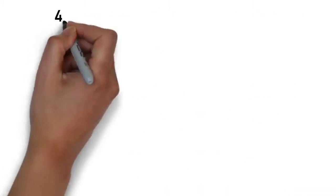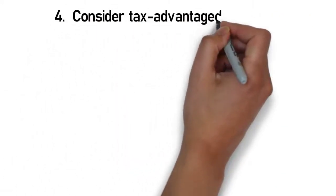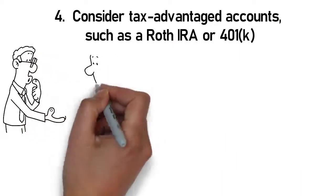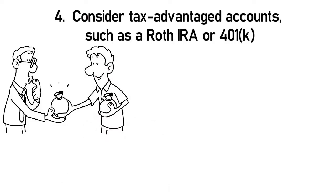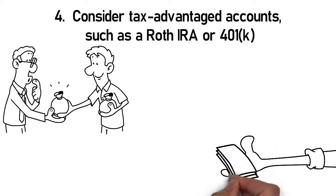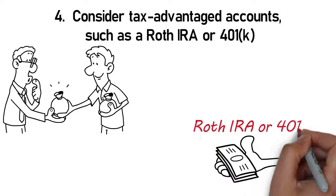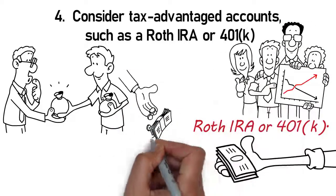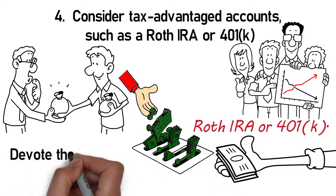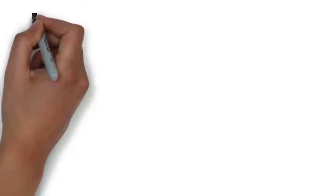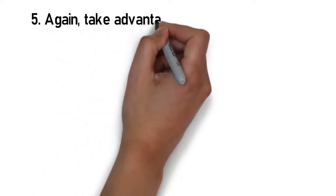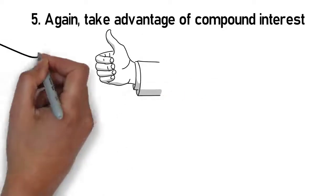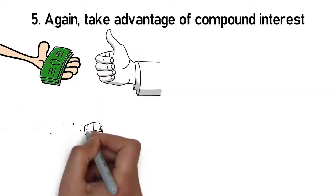Number four is to consider tax advantage accounts such as a Roth IRA or 401k. Another thing to consider when saving for your goal is the tax advantages you could receive by contributing to a retirement account such as a Roth IRA or 401k. This can be a great way to minimize the amount of taxes you pay and increase your savings without having to devote additional money to your budget. Number five is to again take advantage of compound interest. The great thing about compound interest is you make money just by letting it do its thing. What's better than earning money while you sleep?